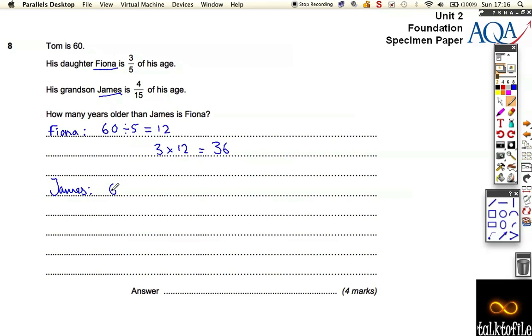For James, we've got to do 60 divided by the denominator, in this case 15, that gives us 4. But he's not one-fifteenth of the age, he's four-fifteenths. So we want to do 4 times our answer, 4, which then gives us 16.